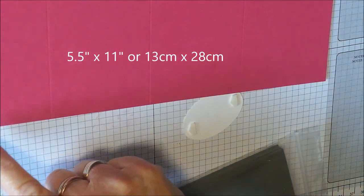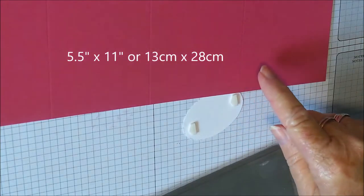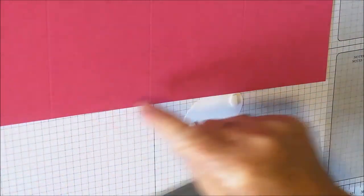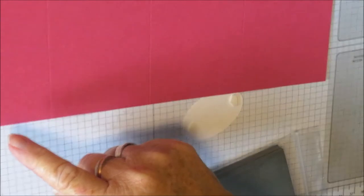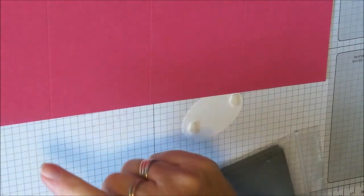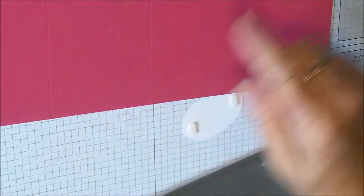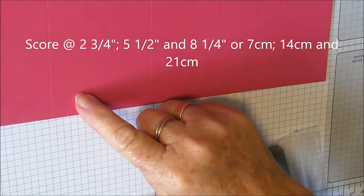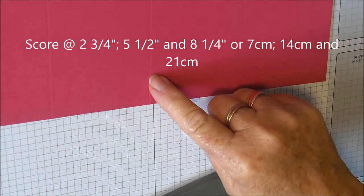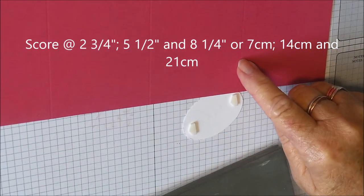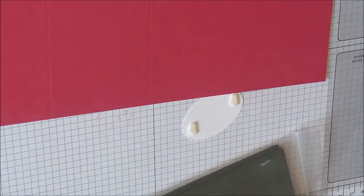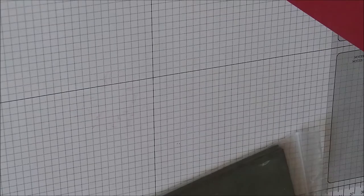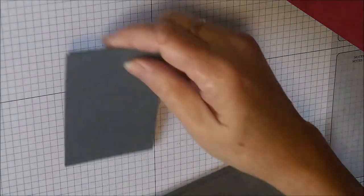You're going to start out with a piece of card which measures five and a half by eleven. I'll put the metric measurements on my blog as well. Then you're going to score at two and three quarters, five and a half, and eight and a quarter.